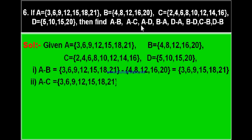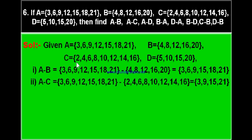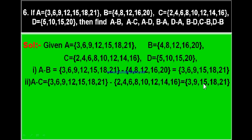Second part: A minus C. Write set A minus set C = {2, 4, 6, 8, 10, 12, 14, 16}. Element 3 is not in C — write 3. 6 is in C — don't write. 9 is not in C — write 9. 12 is in C — leave it. 15 is not in C — write 15. 18 is not in C — write 18. 21 is not in C — write 21. Therefore A minus C equals {3, 9, 15, 18, 21}.